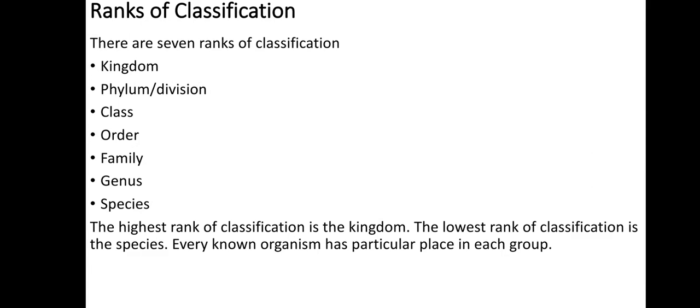Now let's see the ranks of classification. There are seven ranks of classification. The first one is Kingdom, the second one is Phylum or Division — Phylum is used for Animalia and Division is used for plants. The third one is Class, the fourth is Order, the fifth is Family, the sixth is Genus, and the last one is Species. The highest rank of classification is Kingdom and the lowest rank is Species. Every organism has a particular place in each group and can be classified according to these ranks.